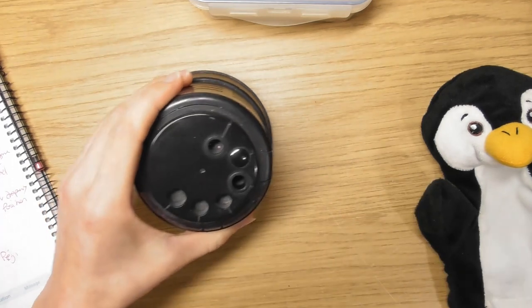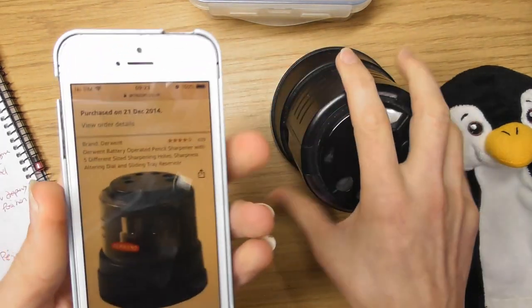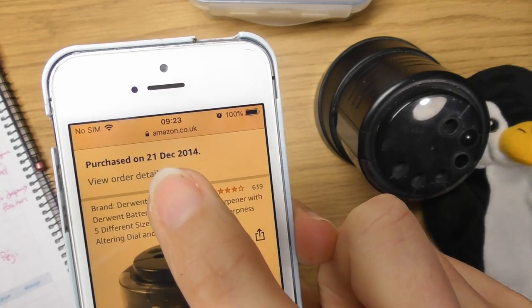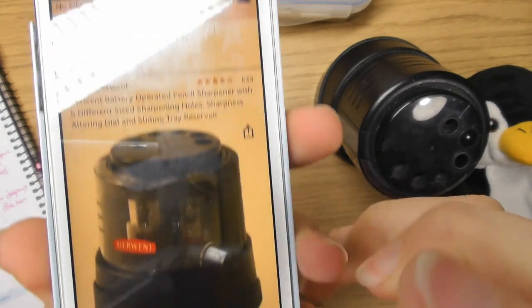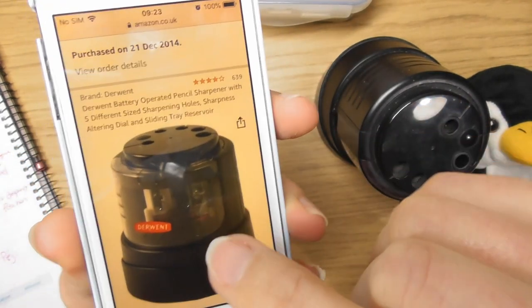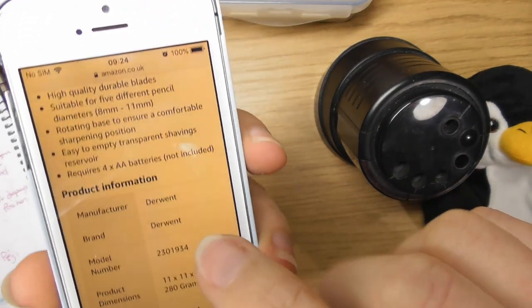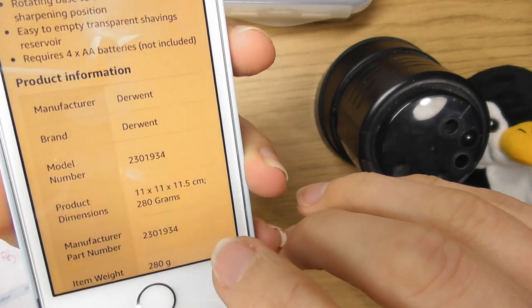So this here, this is actually a Derwent battery operated pencil sharpener. I bought it in 2014 and the thing is you can't actually buy this now. It's gone out of stock and they replaced it with a newer model.